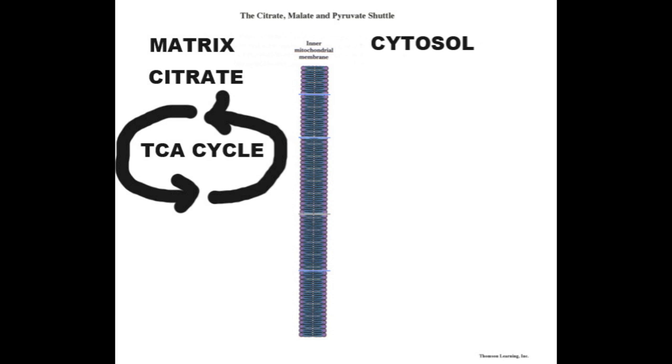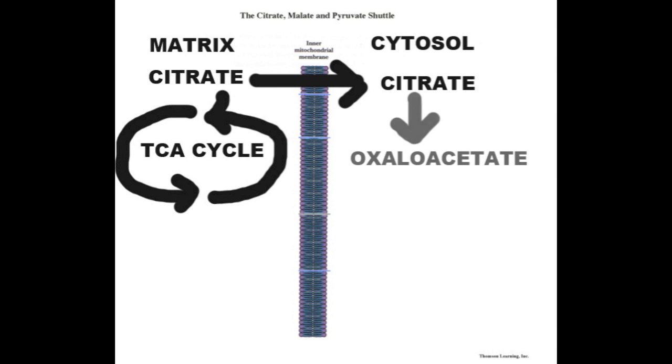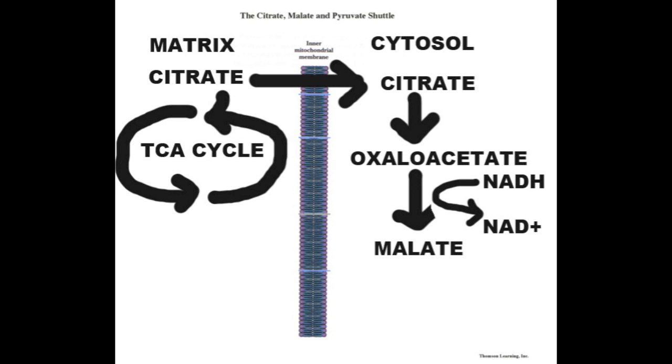Citrate also participates in the citrate-malate shuttle. Citrate is transported out of the mitochondrial matrix and back into the cytosol, where ATP-citrate-lyase converts citrate back into oxaloacetate. Oxaloacetate is reduced to malate as NADH is oxidized to NAD+.